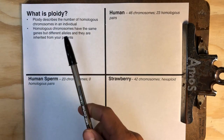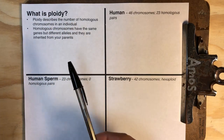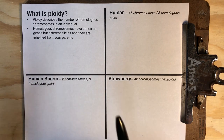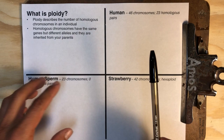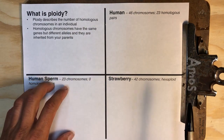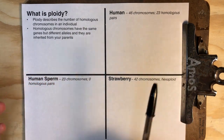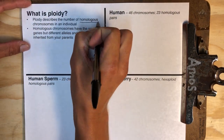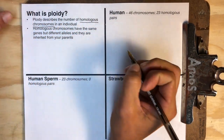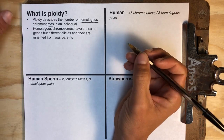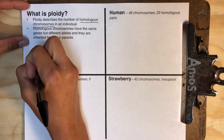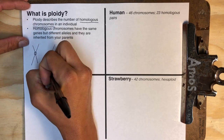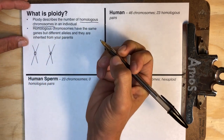Ploidy is a difficult concept for a lot of people to grasp, but it's one of these things that is really going to make the difference between if you truly understand mitosis and meiosis or you do not. Ploidy has to do with the number of homologous chromosomes inside of an individual. Homologous chromosomes are chromosomes that are going to have the same genes, but the alleles for those genes are not the same.